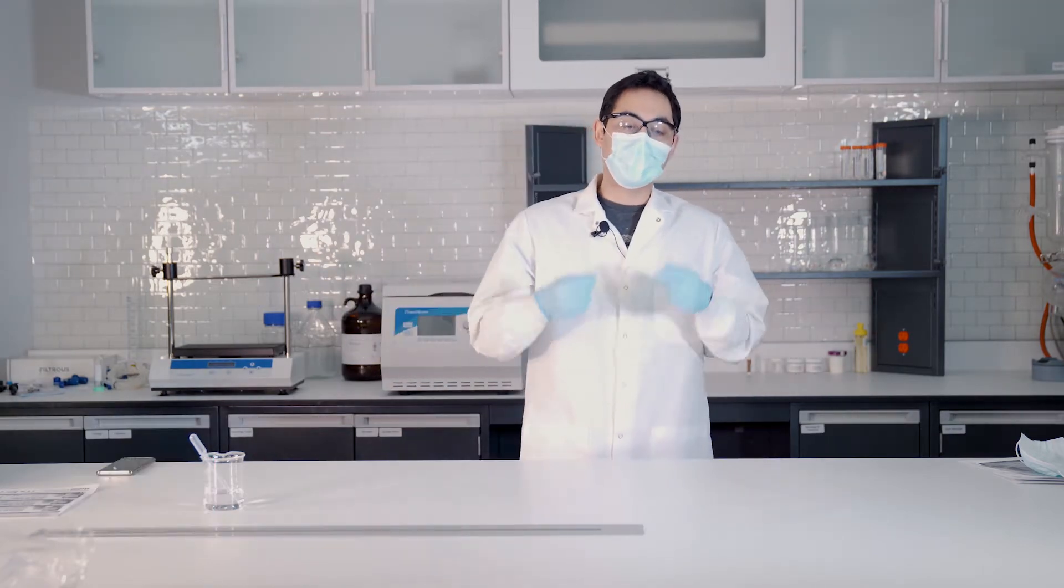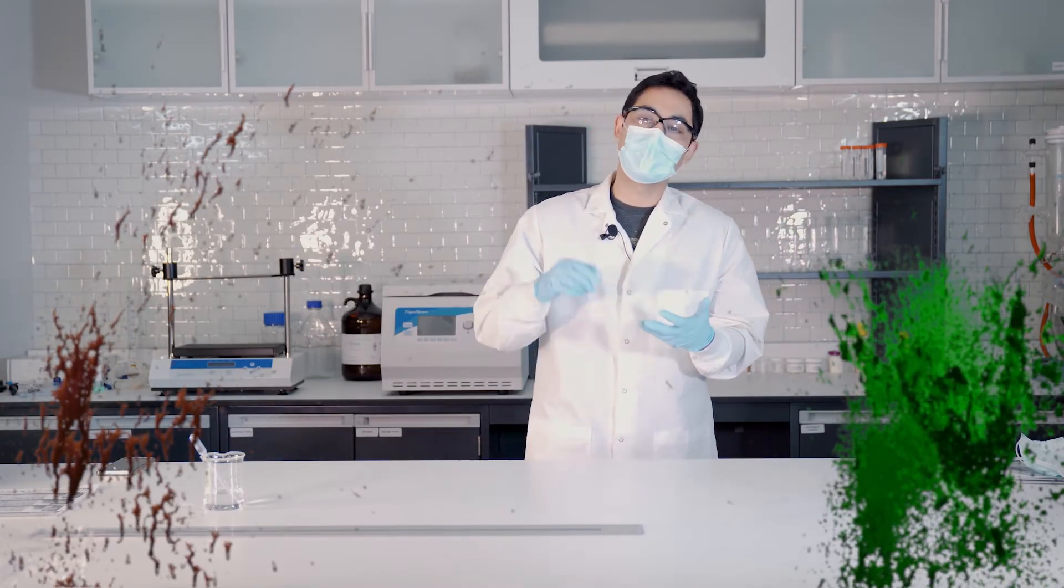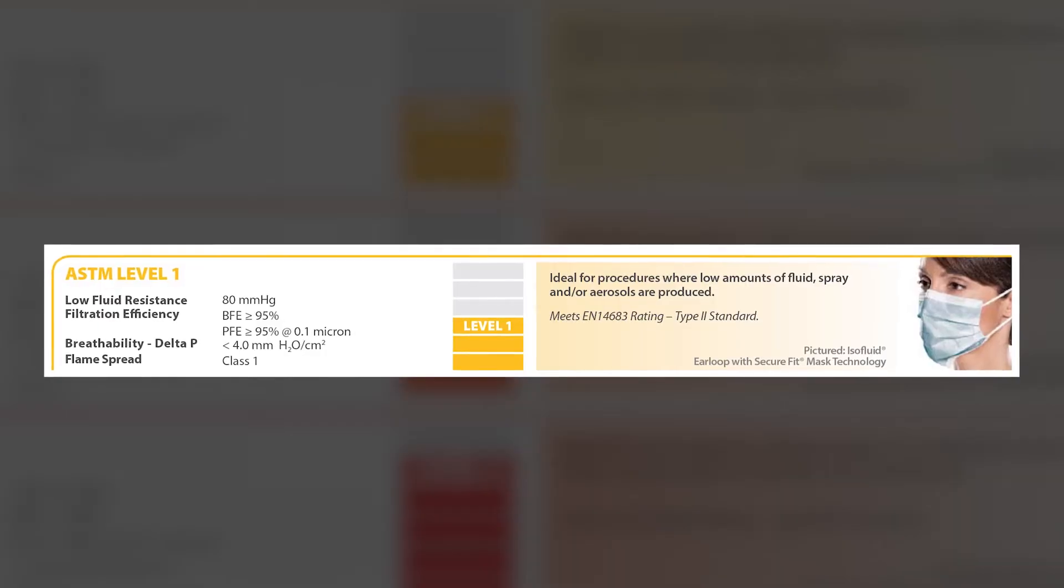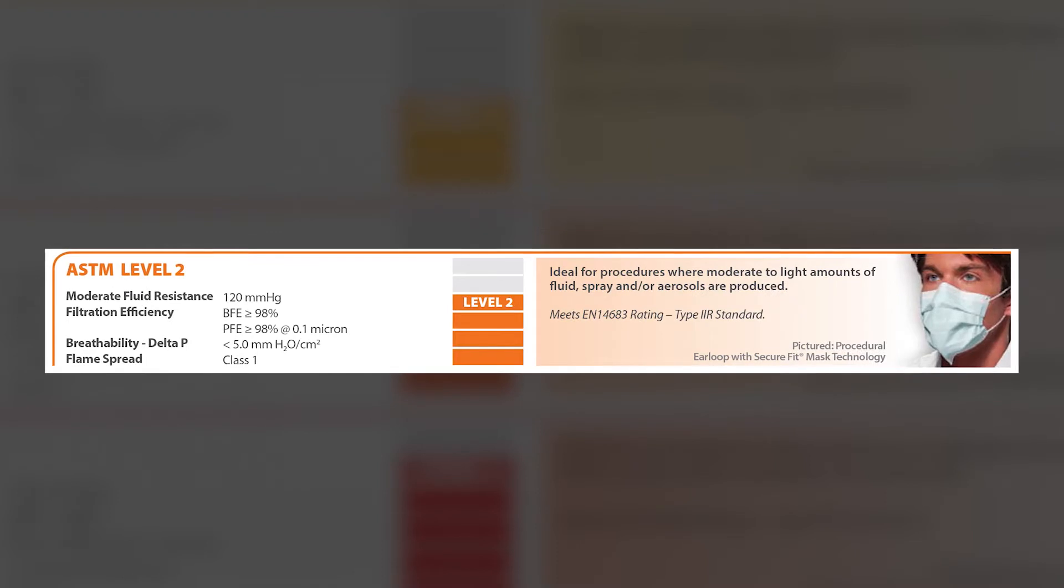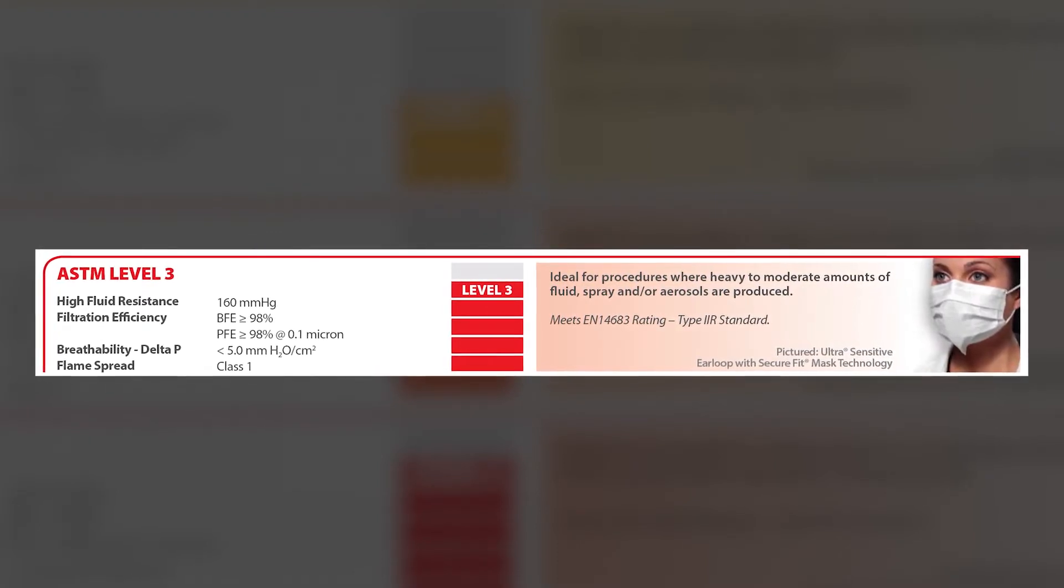Now the pore sizes on these are relatively the same. This has more to do with splatter, like if you're working with blood or patients and you're having different splatters. Level 1 is just kind of for basic, level 2 offers more protection, and then level 3 is for heavy splatter, it offers the most protection. But that's if liquid is directly getting in contact with your mask.